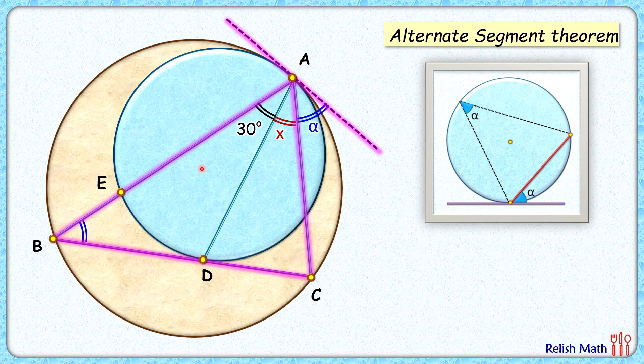So here, the angle B, that will be the same as alpha degrees by alternate segment theorem. Now let's join ED here. Now if I'm interested in this angle E here.